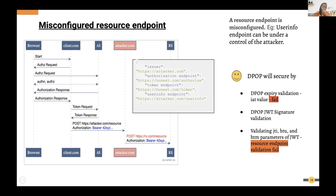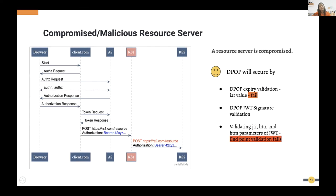The second attacker model involves a malicious resource server: the correct resource server is replaced by a malicious one in the middle, which replays the request and captures the resource for the attacker rather than the client. This is also mitigated by DPoP through the extra validation that checks the owner of the particular access token.